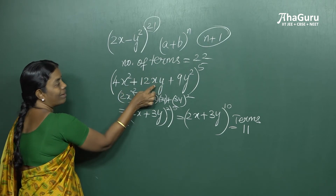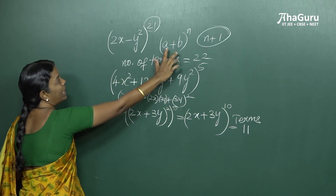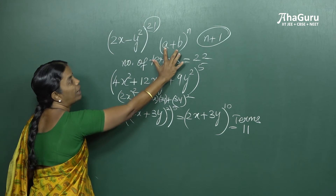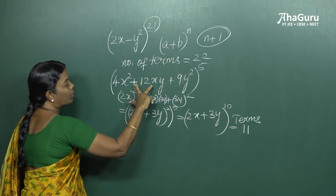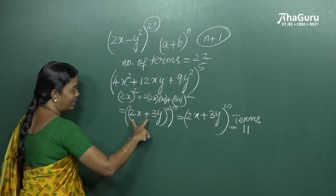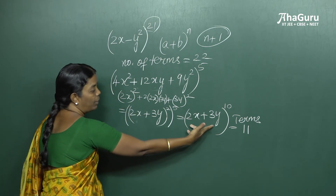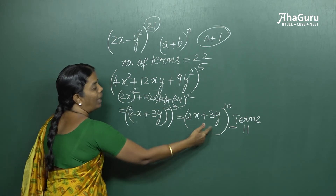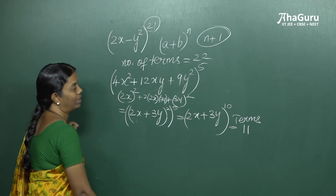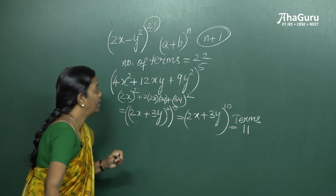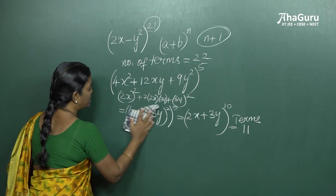Again, I repeat this concept. You know the expansion for a binomial. But if you are able to rewrite the expression as a perfect square and bring it to a binomial form, and then identify the number of terms, it's going to be easy for you. Now we will see one more question.